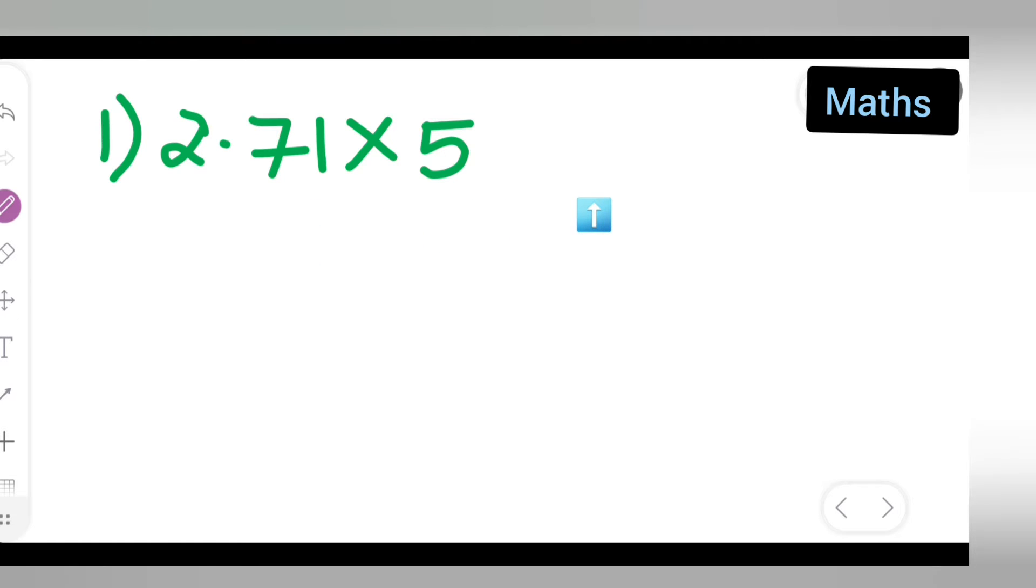In this case, the shortcut trick is to write down 271 upon 100. Why did I write 100 here? Because the decimal point is two places over - one, two - so 10 and 100.